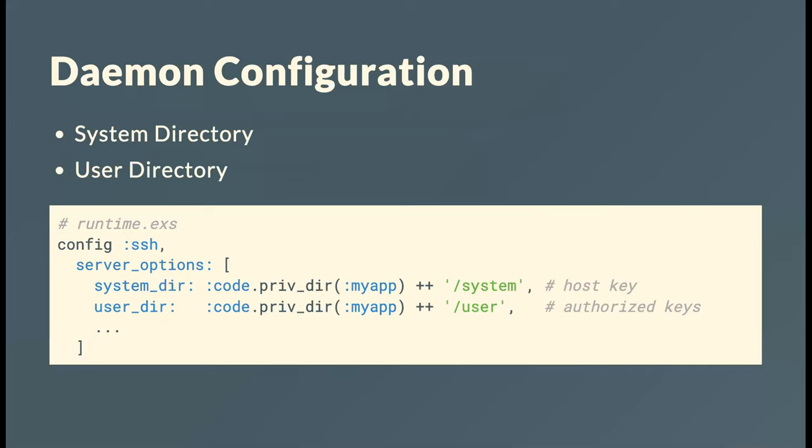If you're going to be a daemon, you need a system directory to host your host key. Normally a host has one host key used by sshd, but since you're running a BEAM process, it still needs a key representing the server's identity. You also need a user directory, and in there you need an authorized_keys file, which contains the list of all public keys of people or devices permitted to connect. If you're not in authorized_keys you won't be able to reach the server.